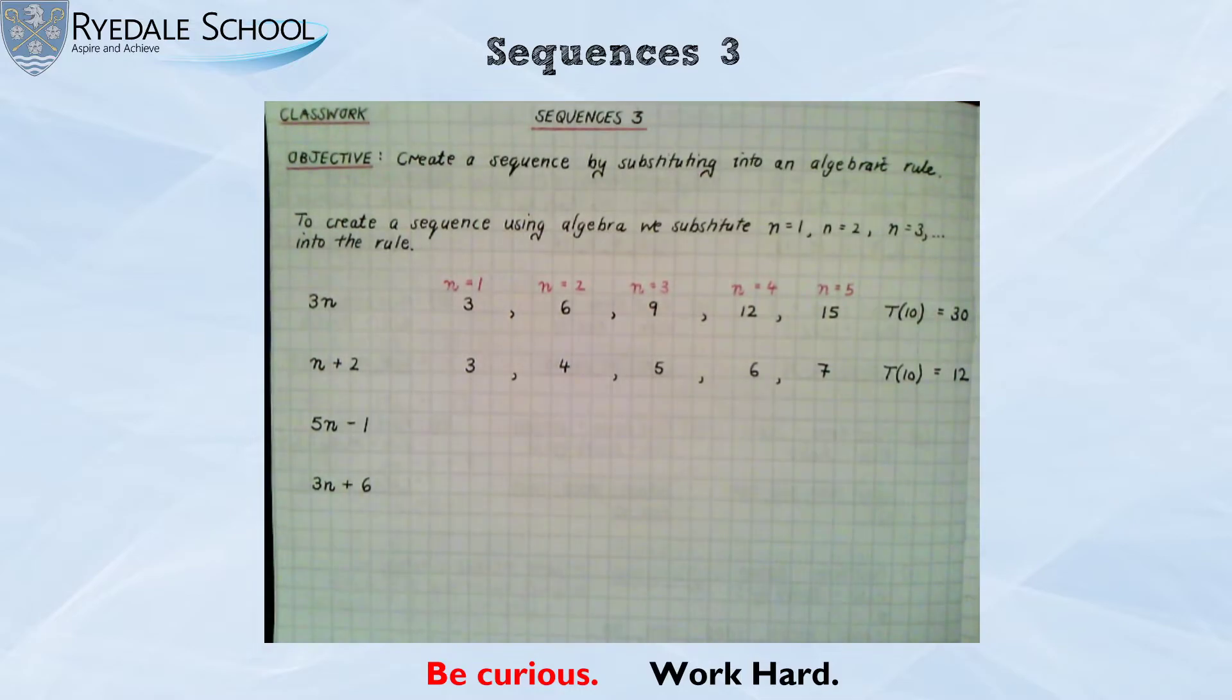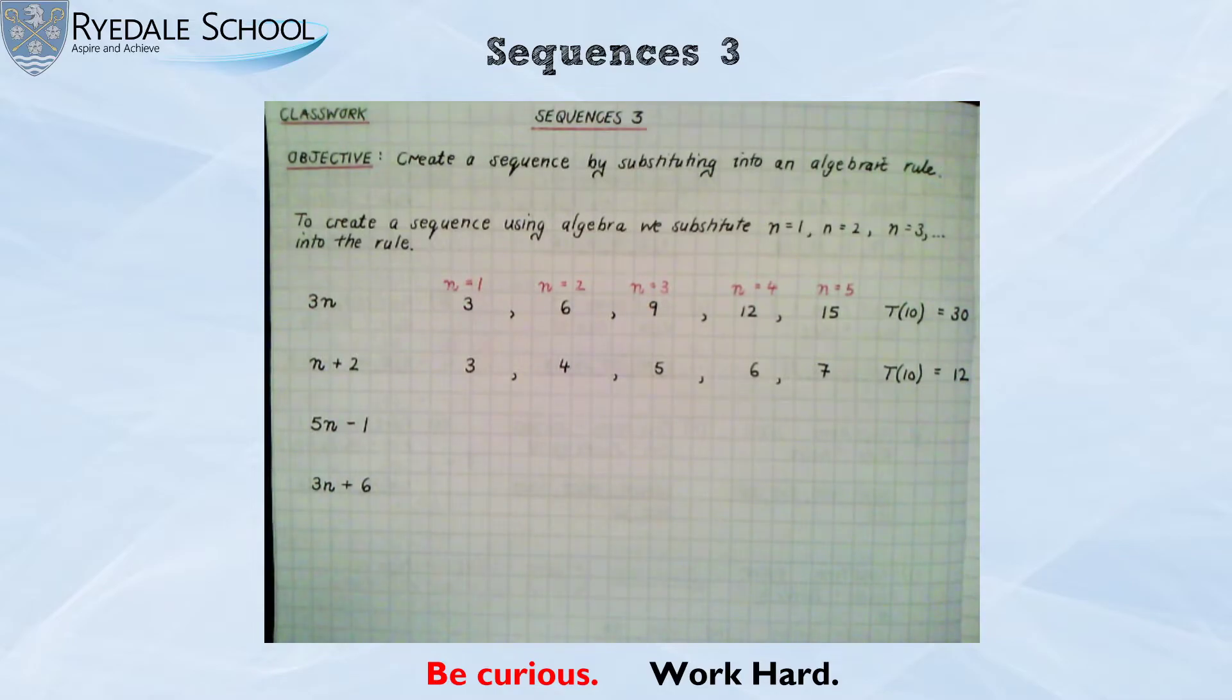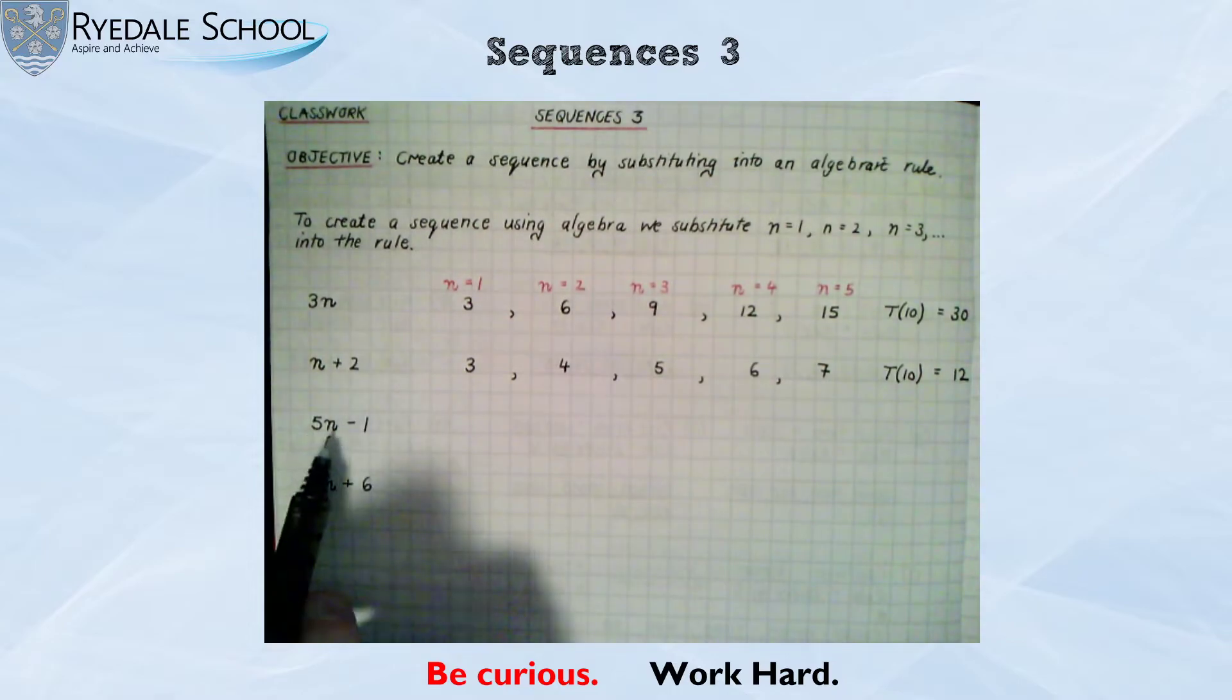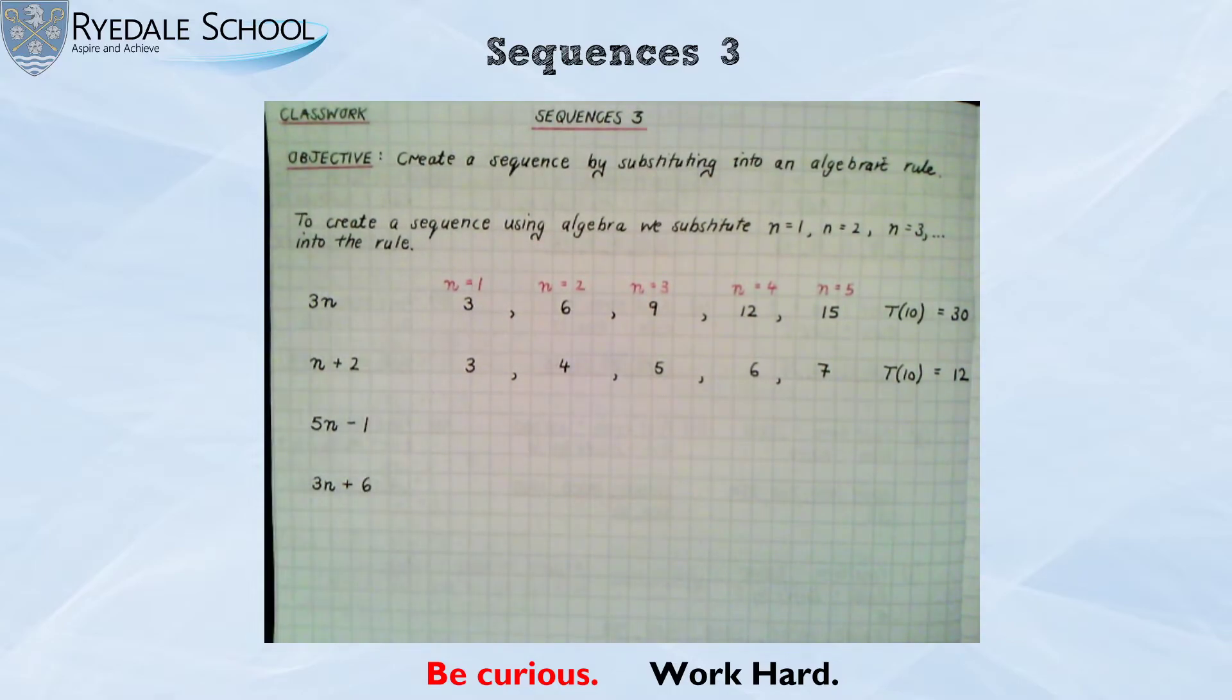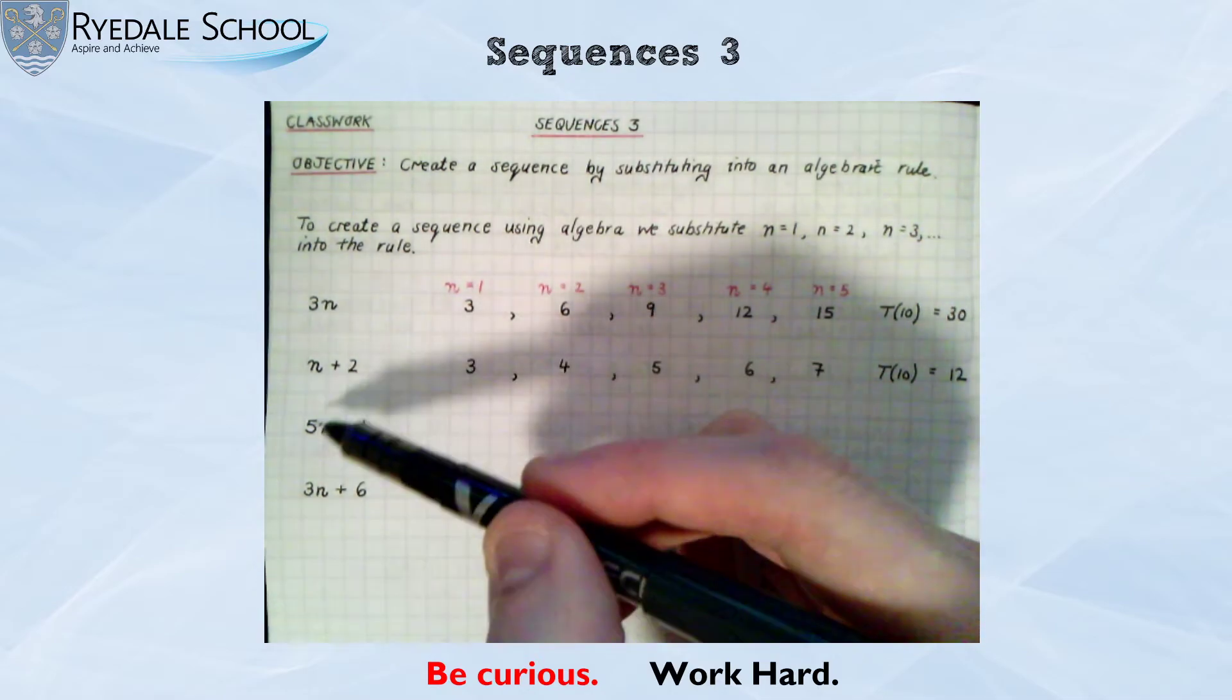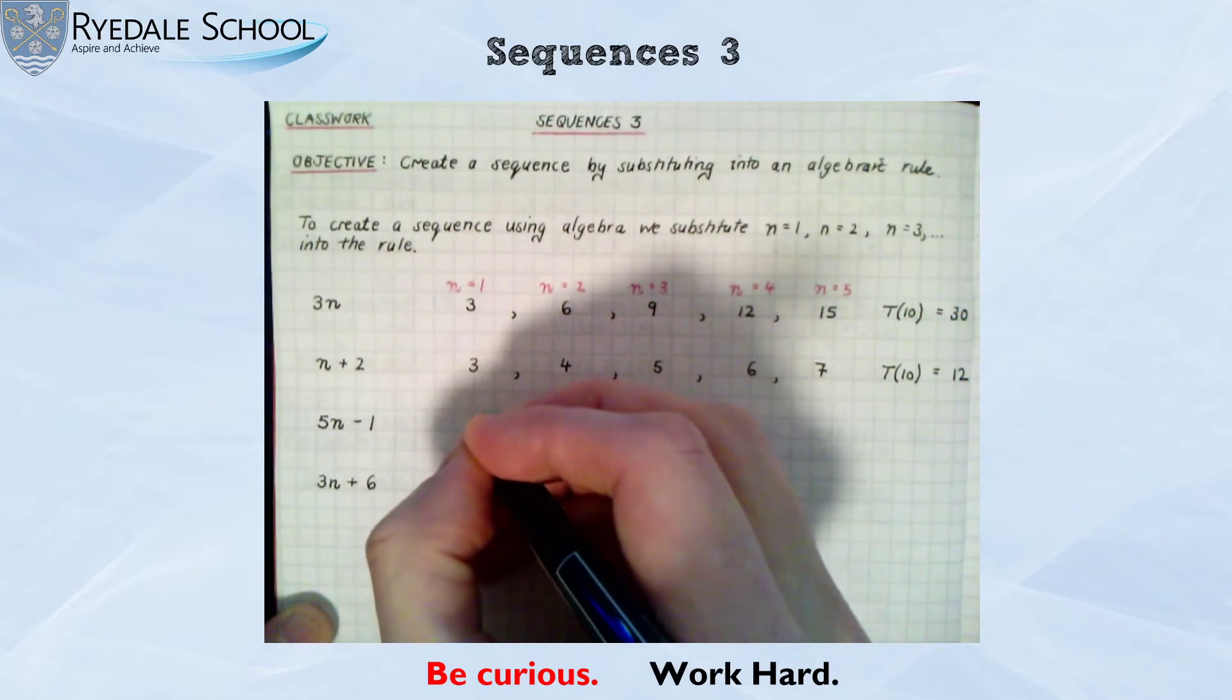Let's look at my third rule. Starting to get a little bit more complicated with my algebra on this one. But as long as we understand what it means, we will be fine when we substitute in. It is 5n take away 1. Well, 5n means I am multiplying by 5. So I'm going to do 5 times my number. But then I need to take away 1. So 5 times my number when n is 1, 5 times 1 is 5. Take away 1 is 4.